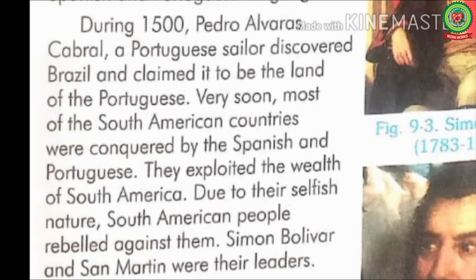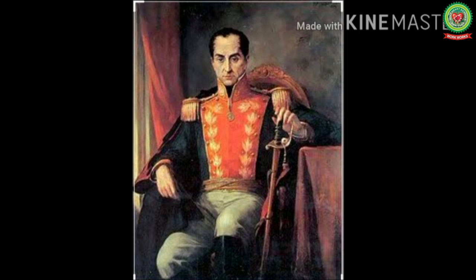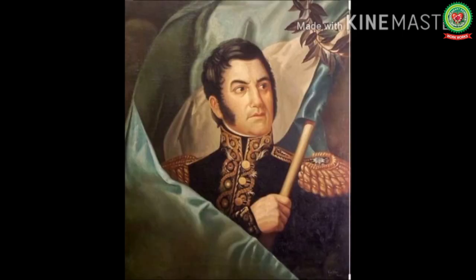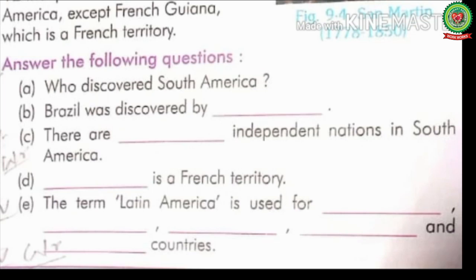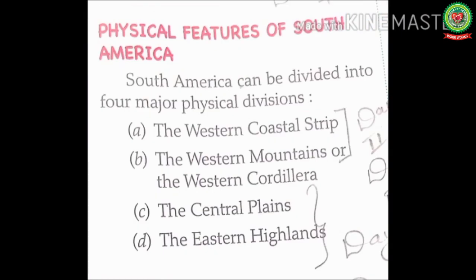Simon Bolívar and San Martín were their leaders. This is the picture of Simon Bolívar and San Martín — they both were the leaders of the South American movement for independence. In the early 1800s the South American colonies became independent. Today there are 12 independent countries in South America, except French Guiana which is a French territory. Here territory means area — it means French Guiana is a part of the European Union.